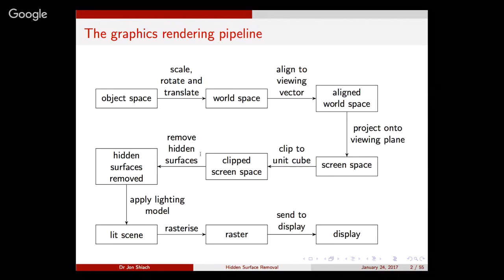Just a very quick recap from where we are. We looked at how we can define objects in their own space, usually centered at the origin. We apply scale, rotation, and translation operations to build our world space. Then we have to align, so we rotate the whole world space so that our direction of view is looking along the z-axis. Then we project onto the viewing plane, restricted to 2D representation. We also clip, removing anything outside of our visible region and clipping that to the edges of the screen.